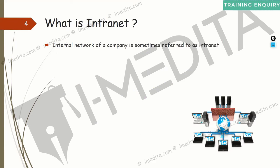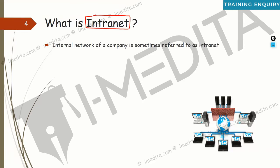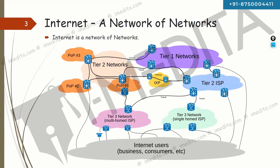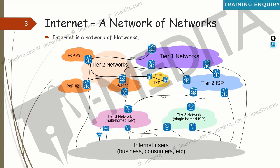Then you have intranet — the internal network of a company. When a person is within the network of their company, connected across multiple branches through a service provider, we call that the intranet. It's not a typo of 'internet' — intranet specifically refers to being within the company's private network.